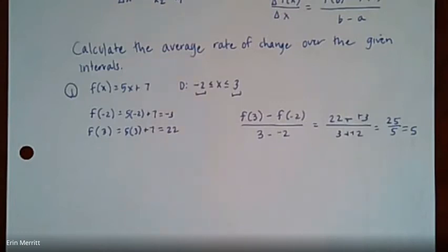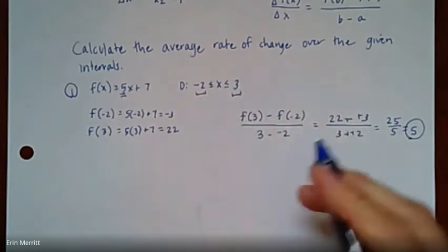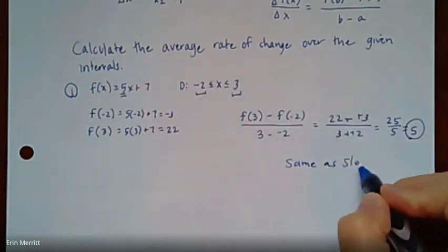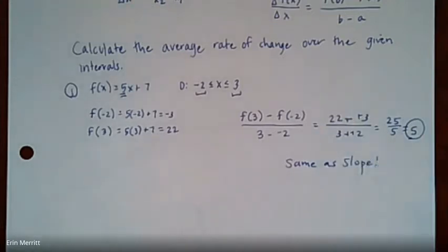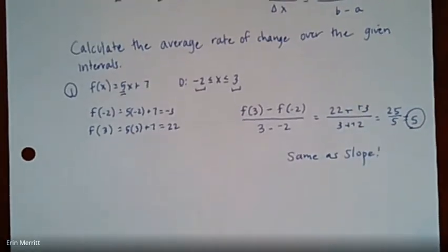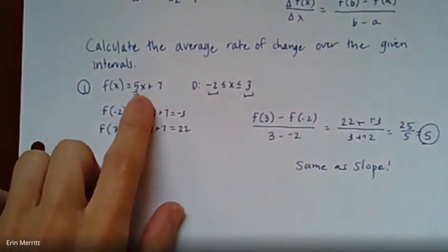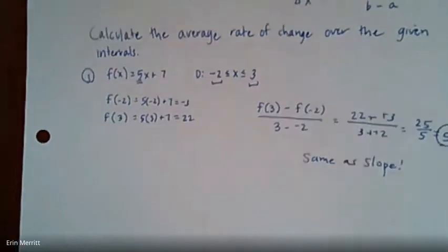So if I take my values, I got 22 minus -3 all over 3 minus -2. Both cases, we go plus a positive, plus a positive, so this will give us 25 over 5, and we come out with 5. This should not be surprising, because when you think about it, if average rate of change is synonymous with the slope, and this is a linear function, there's the slope right there, all right? So it's the same as the slope. So any linear function I give you, if I ask you for the rate of change, you can just tell me like, hey, I don't even need to show the calculation no matter what the domain is. It is just whatever the slope is.